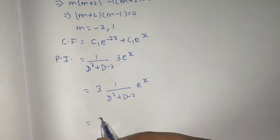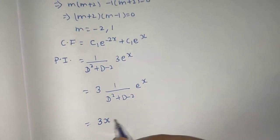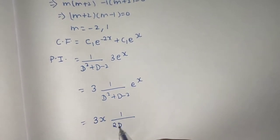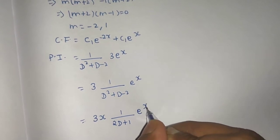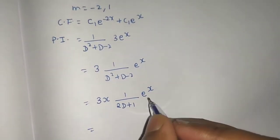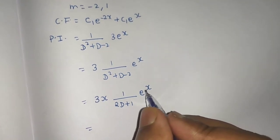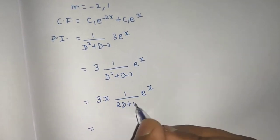What we do is multiply by 1 and x outside and differentiate this denominator. You will get 2 d plus 1. This will operate on e power x. It is perfectly fine because if you put 1, 1 is basically the coefficient of x. If you put 1 so this will become 3.